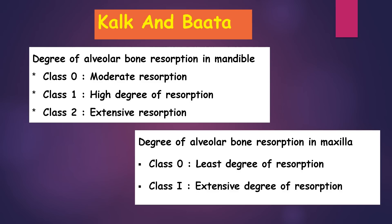The next classification is given by Calc and Bata, who classified the degree of alveolar bone resorption in the mandible and maxilla. In the mandible, there are 3 classes — Class 0 to Class 2. Class 0 is moderate resorption. Class 1 is a high degree of resorption. And Class 2 is extensive resorption. In the maxilla, Classes 0 and 1 only: Class 0 is least degree of resorption, and Class 1 is extensive degree of resorption.